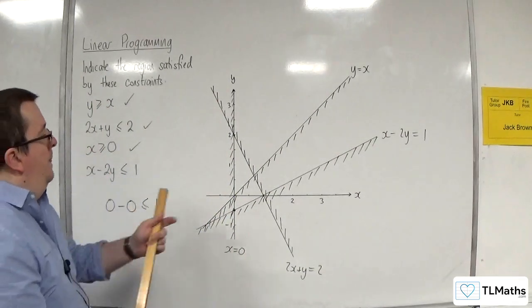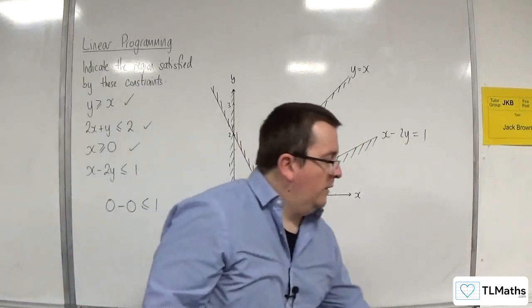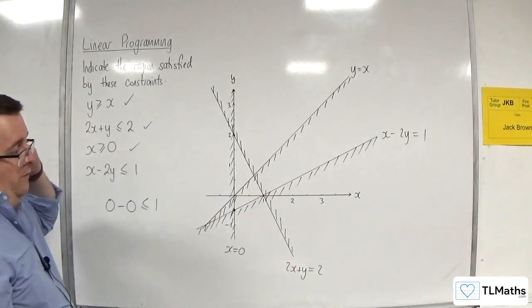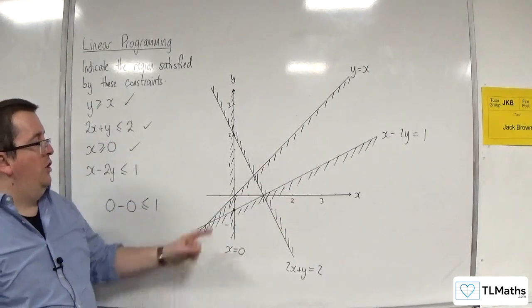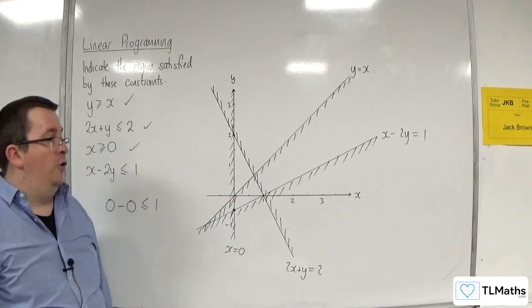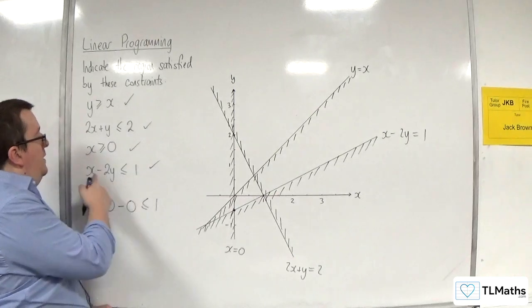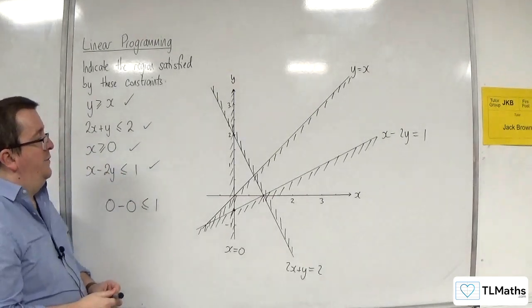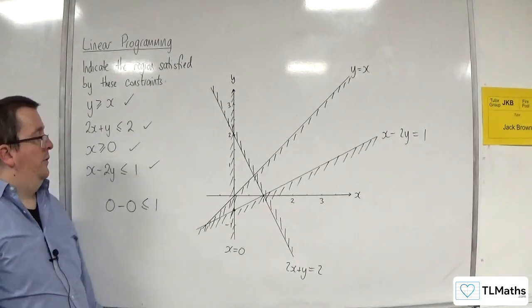So it turns out this one, the last one that we've just drawn, is actually redundant. Because it's actually not cutting up the region that we'd already identified at all. So it's not affecting it in the slightest. So actually this inequality here is redundant. We don't need it to actually identify the feasible region. And that can happen with situations.